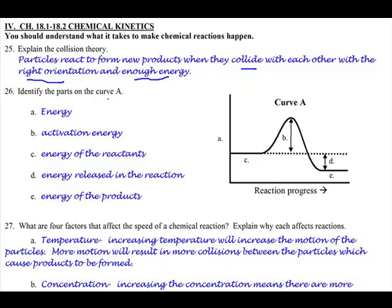Number 26. Identify the parts of the curve over here. So energy is this axis. This is the reaction progress, so over time, time's going by. We're going to the right, and this is energy, how much energy we have. So we start off with C. Let's just kind of go out of order here. C is the energy of the reactants. How much energy do they have to begin with?